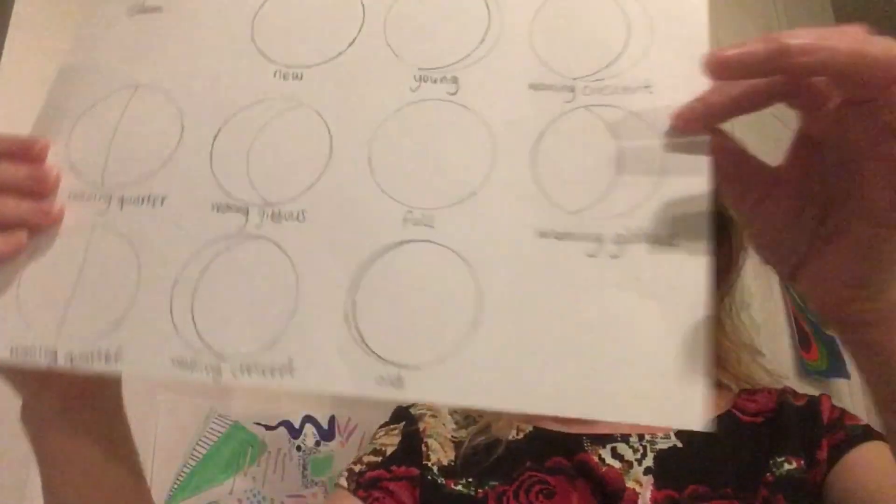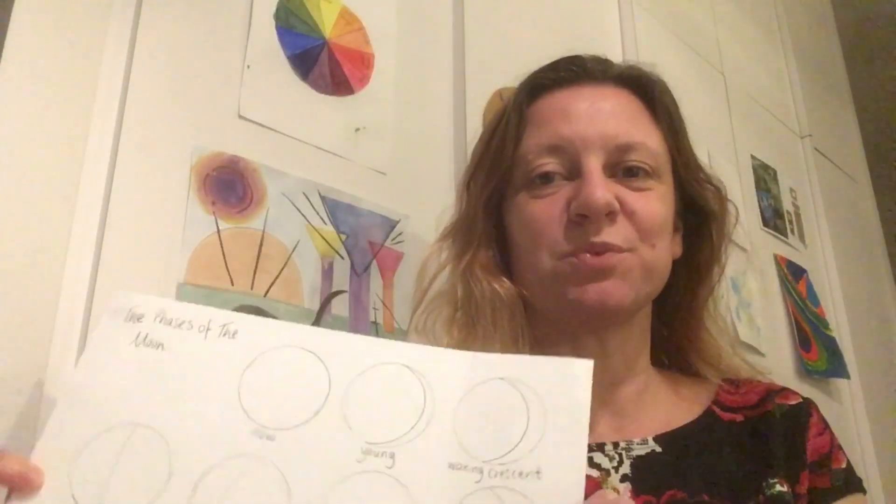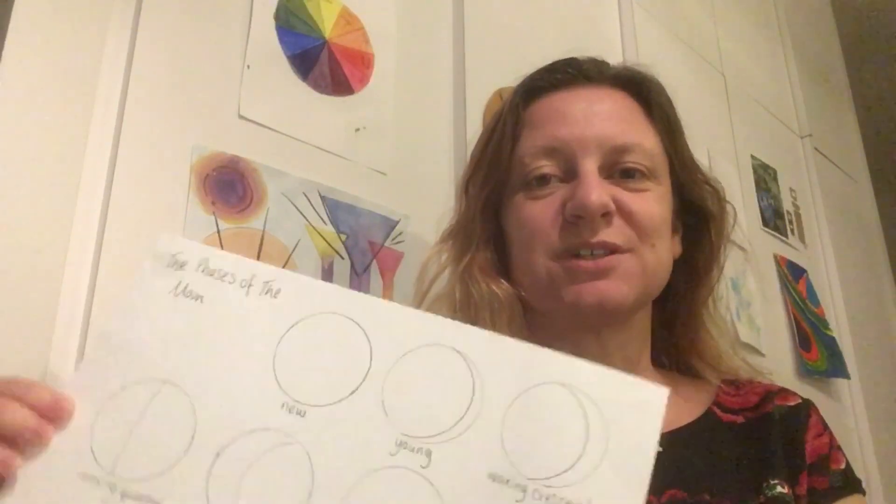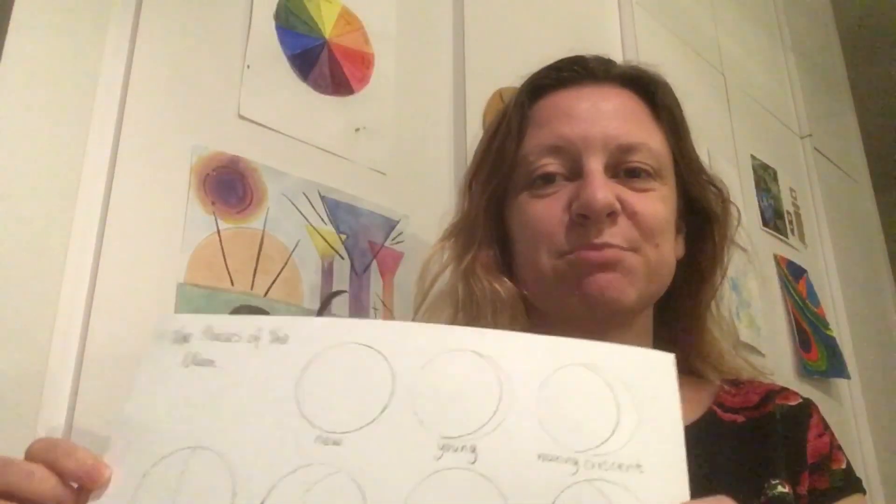When you've finished drawing the phases of the moon using line only, you're ready to start adding some tonal shading. For this we're going to need a pencil. I'm going to use a 2B pencil, but don't worry if you don't have one, you can use whatever materials you have. We're going to use a small circular motion to build up the layers of tone. Let's get started.